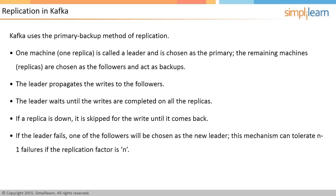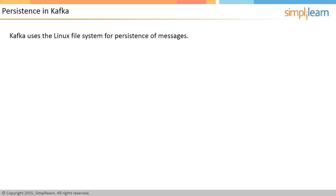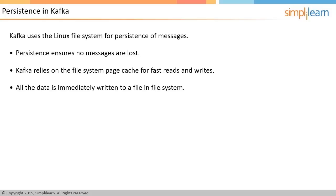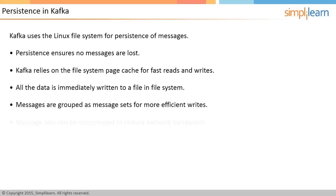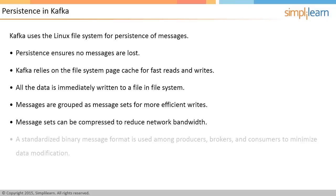Persistence means a message can be delivered even if the machine that handles the message fails. Kafka uses the Linux file system for persistence of messages, ensuring no messages are lost. Kafka relies on the file system page cache for fast reads and writes; all data is immediately written to a file so it can be recovered even if the machine fails. Messages are grouped as message sets for more efficient writes, and message sets can be compressed to reduce network bandwidth. A standardized binary message format is used among producers, brokers, and consumers to minimize data modification.